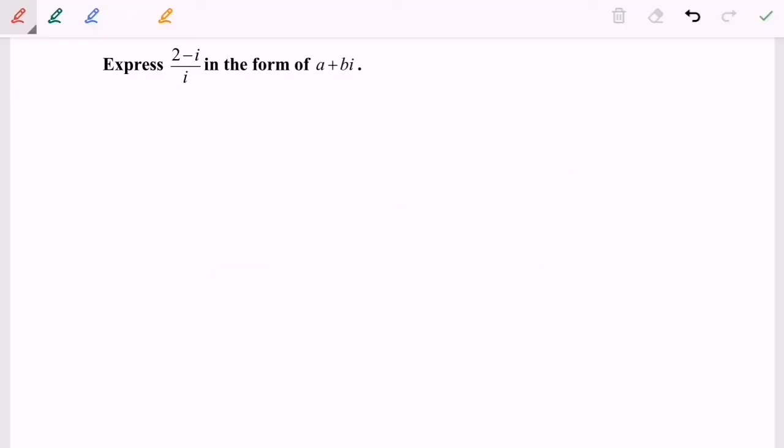Hello everyone, so now I'm going to discuss another example for complex numbers. Express (2 - i) over i in the form of a + bi.